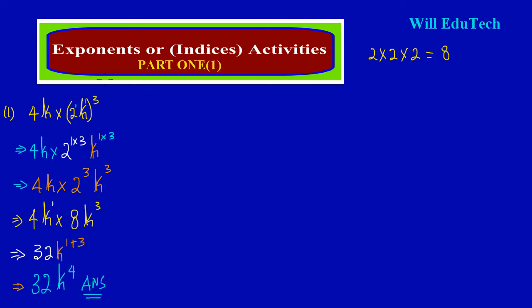Now let's move on quickly to question 2. In question 2 we have 125 raised to the 1/3 power — that is, raised to the one upon 3.